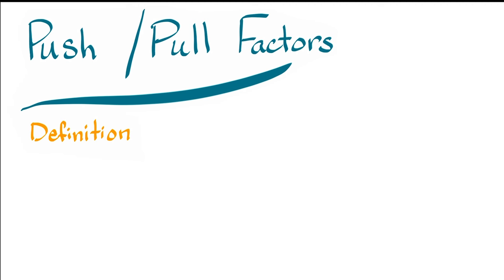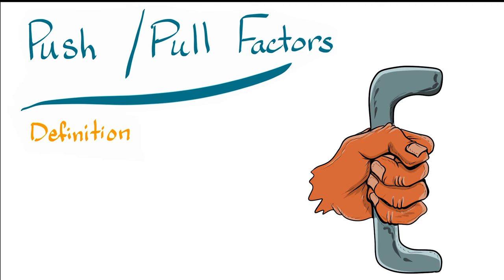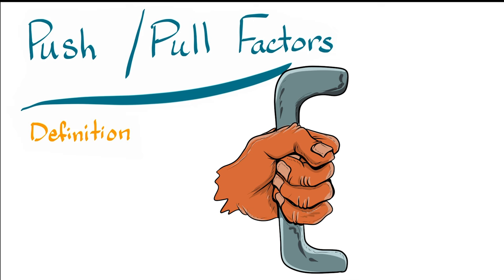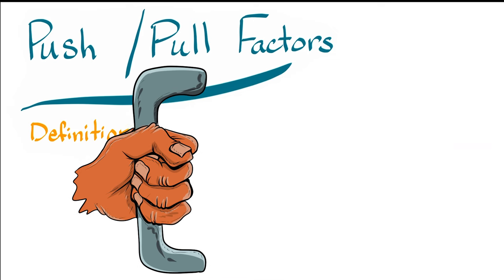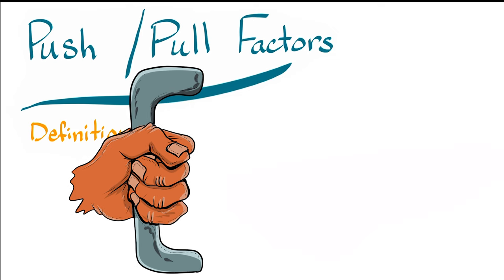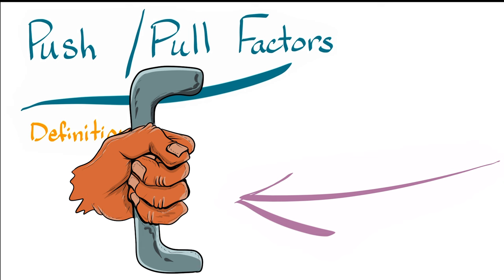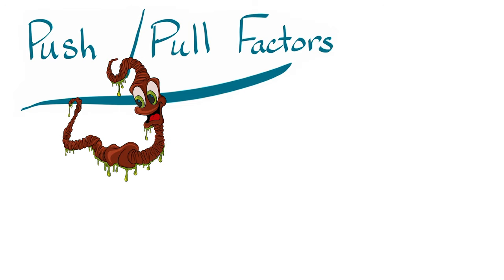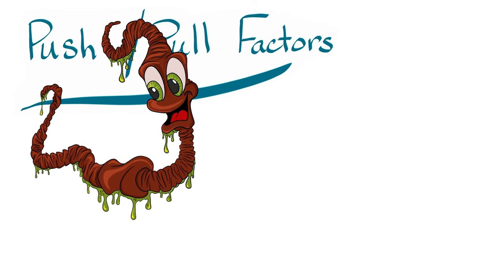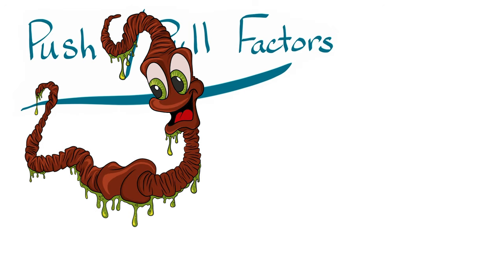When you pull something, it is moving towards you. In this sense, you are the pull factor — the thing you are pulling is trying to come to you. When discussing push and pull factors in a historical setting, we aren't talking about your hand pushing or pulling a thing.